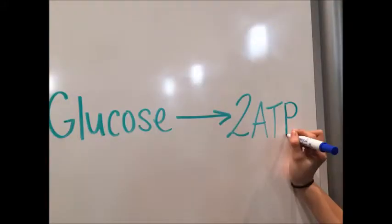For every glucose, only two ATP molecules are made, and lactic acid is produced.